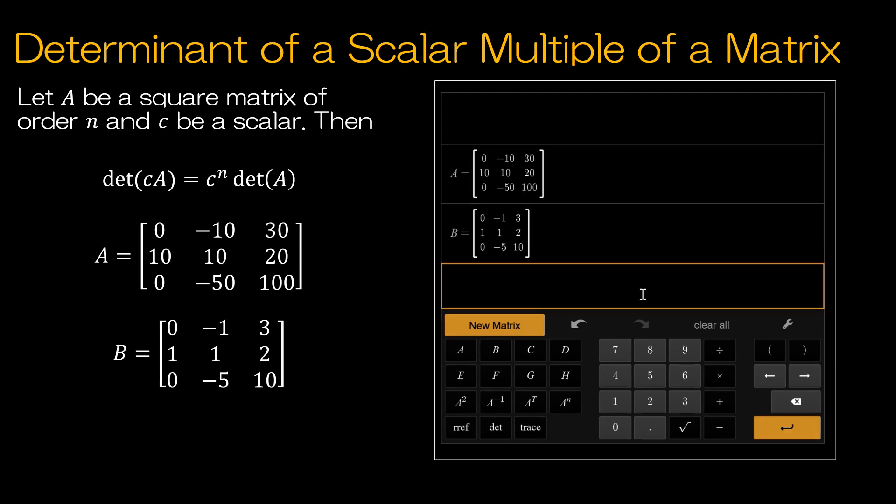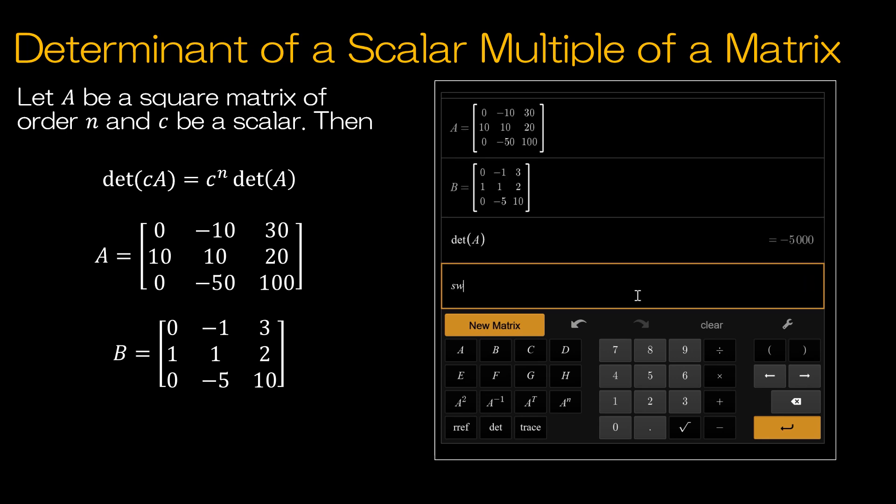Let's take a look at the next property that says if you have some sort of scalar. So here we can see that A and B, if I took matrix B times 10, I would get matrix A. Now let's take a look at the determinant of A compared to the determinant of B. Notice the difference between them.